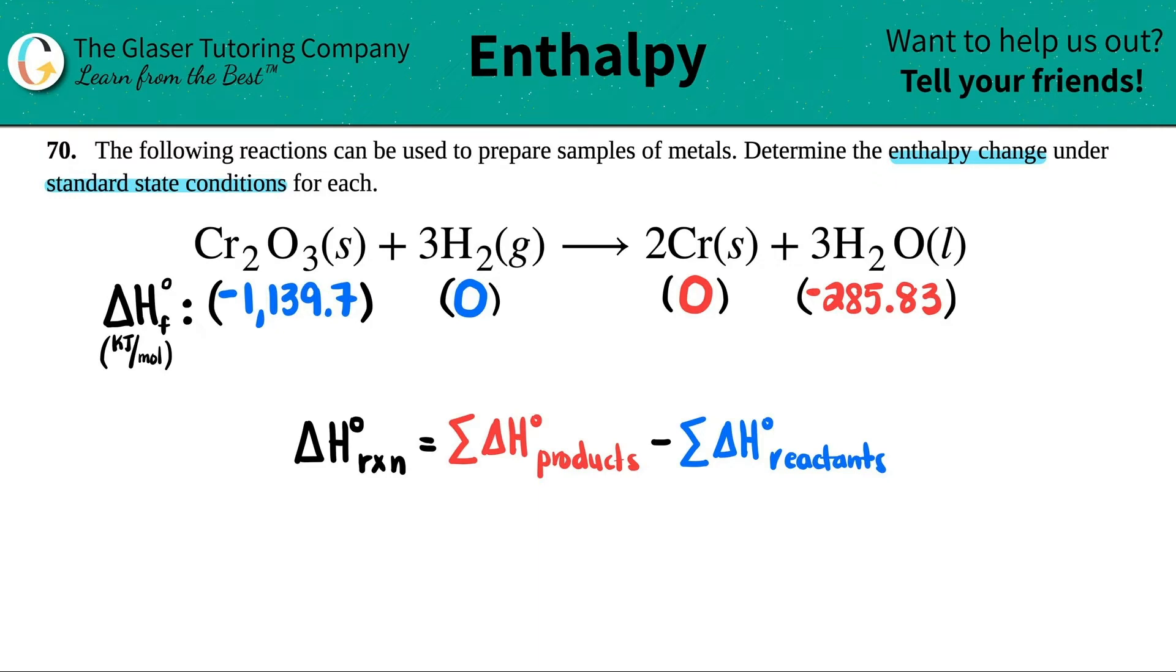What we're going to do is take how many we have. For example, I have one Cr2O3, so I'm going to times this number, the negative 1139.7, by one. I have three H2s, so I multiply three times zero, which would be zero. I have two chromiums, so I do two times zero. And then I have three H2Os, so I just multiply by three. And then I have to add them together. It's Cr2O3 plus H2, so I add those two. Cr plus H2O, so I literally add those to get one final number.